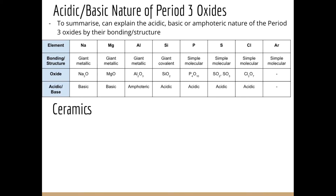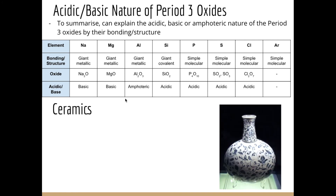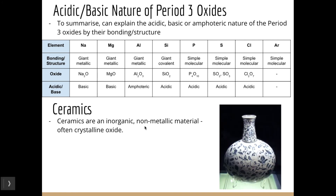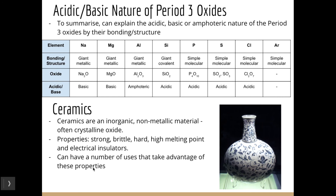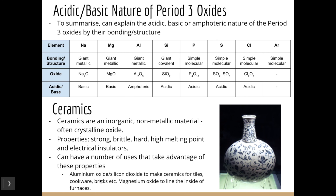Just to finish off, let's look at ceramics — inorganic, non-metallic materials that are often crystalline oxides. They are strong, brittle, hard, have high melting points, and are electrical insulators. Some period three oxides have practical uses that take advantage of these properties: aluminium oxide and silicon dioxide are used to make ceramic tiles, cookware, and bricks; and magnesium oxide can line the inside of furnaces, taking advantage of its very high melting point.